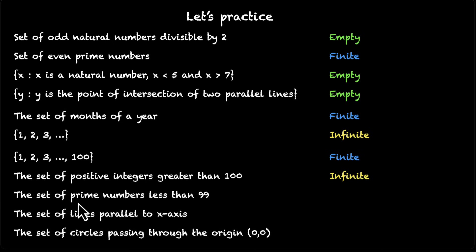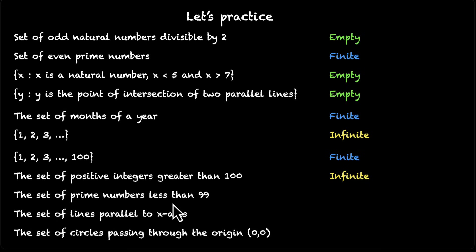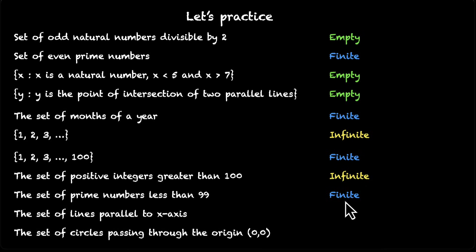The set of prime numbers less than 99. Because there's a limit — you can only go till 99 — you can start with 2 and move up and count the number of primes. So this means this is an example of a finite set.